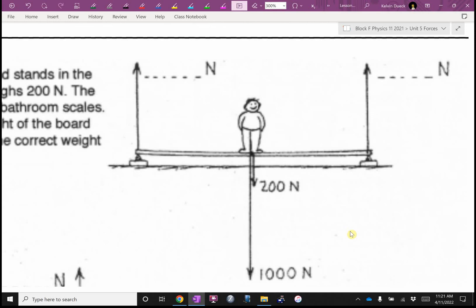Then the forces must be, I'm looking for a word that starts with letter B. Balanced. What's the total force down? What's the total force up? Same answer. Has to be 1,200 Newtons. So, how much is each scale pushing up with?